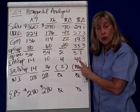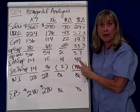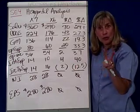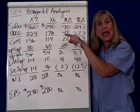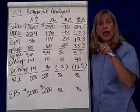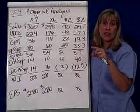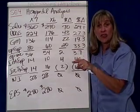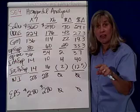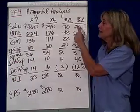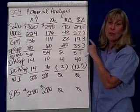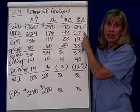We can also do horizontal analysis for a balance sheet. We'll need two years of the balance sheet, and again we'll go across and look at the change between, say, cash in one year and cash in the next year — not only the dollar amount of change, but the percentage change.